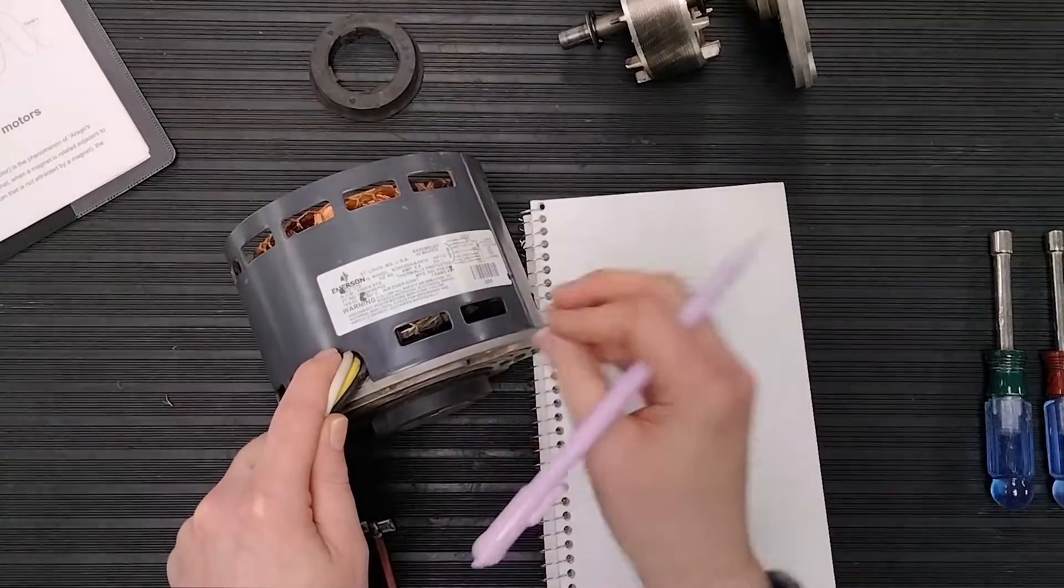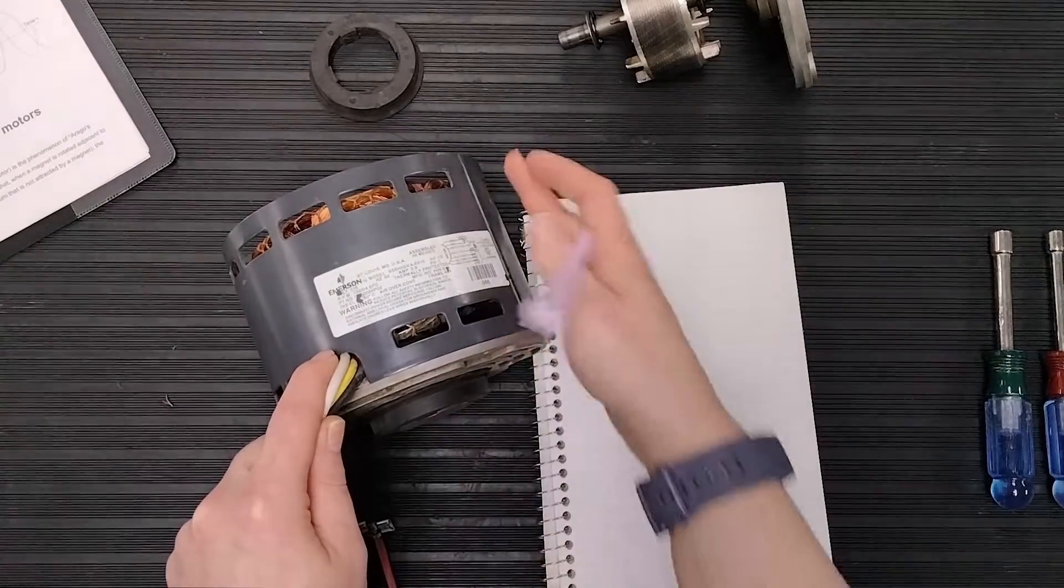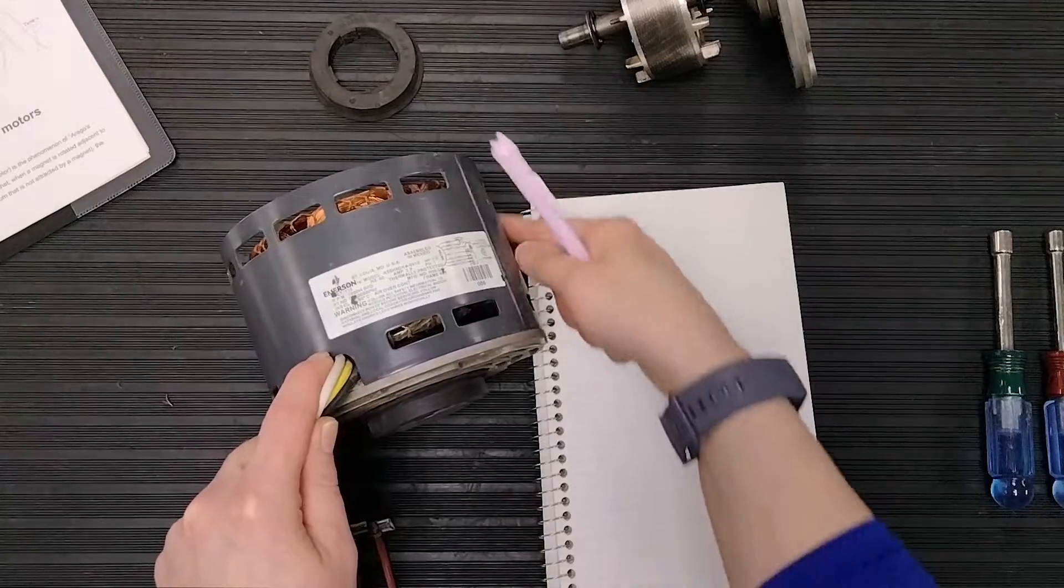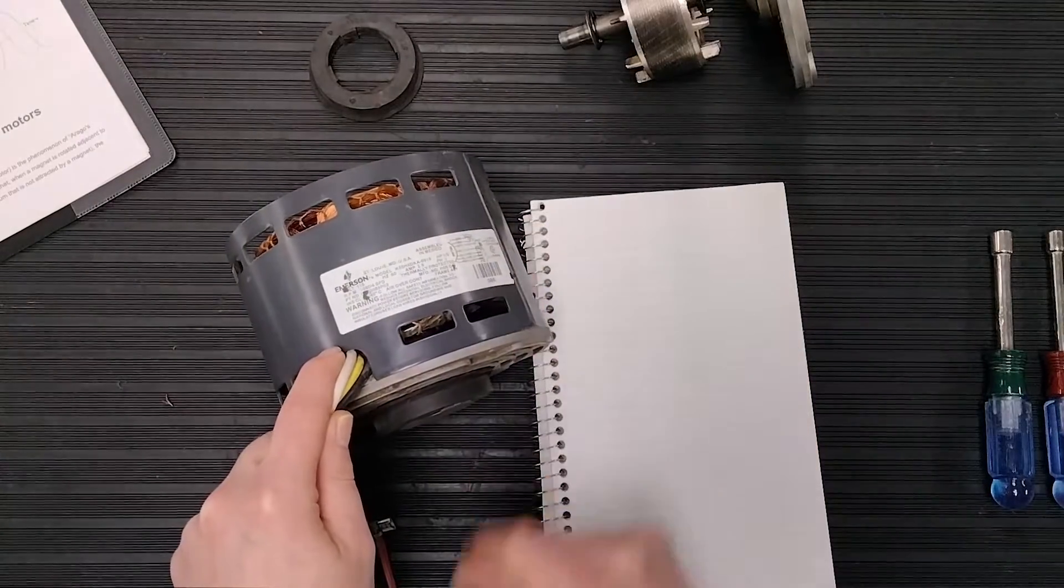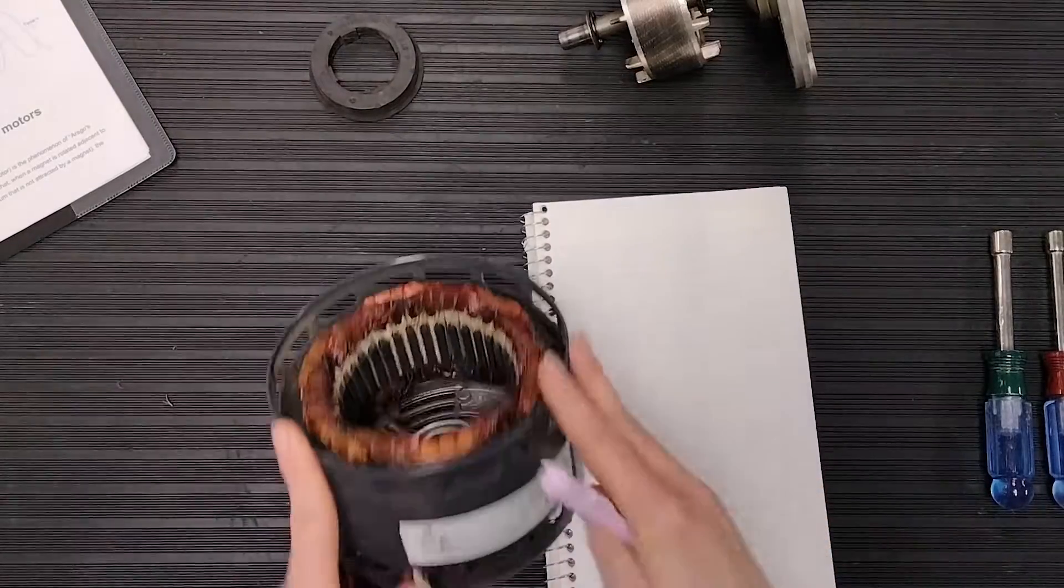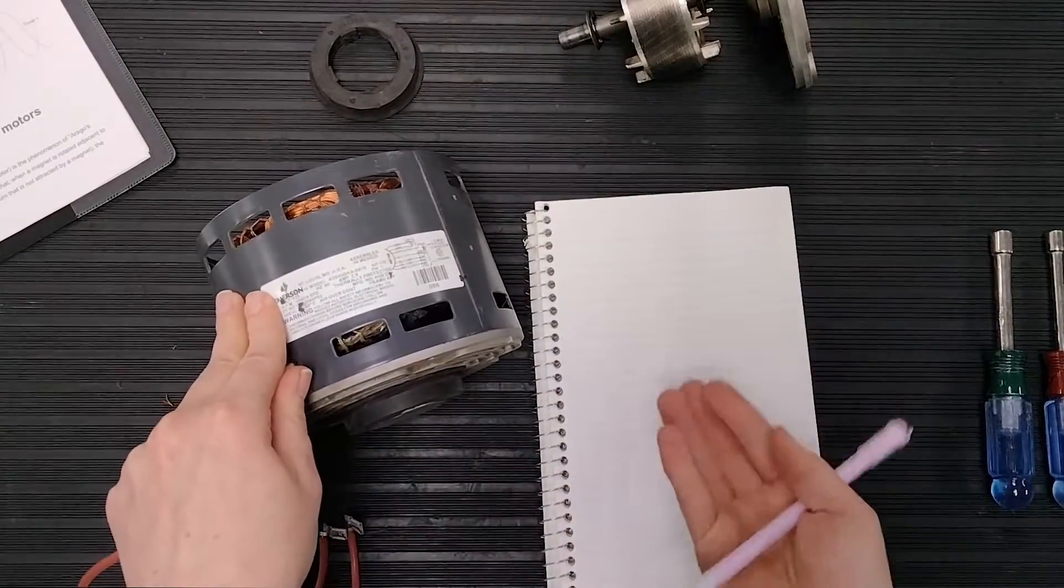All of these look very similar, if not the same. Now this is an evaporator motor, condenser motor is going to be a sealed motor. So now that we know that, we know what these are, we know how we calculate our RPM, why is this important?